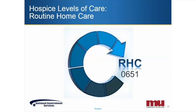A routine home care level of care is a day of care in which an individual who has elected to receive hospice care is at home and is not receiving continuous home care. This definition is taken from the CMS Internet-only Manuals, Publication 100-02, Chapter 9, Section 40, Benefit Coverage. When the manual states "in the home," this does not have to be in the patient's residential home — their home could be a nursing facility, a skilled nursing facility, assisted living facility, etc. The majority of hospice claims are billed at a RHC level of care.